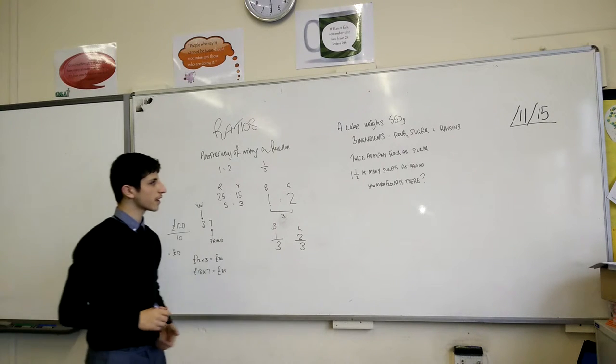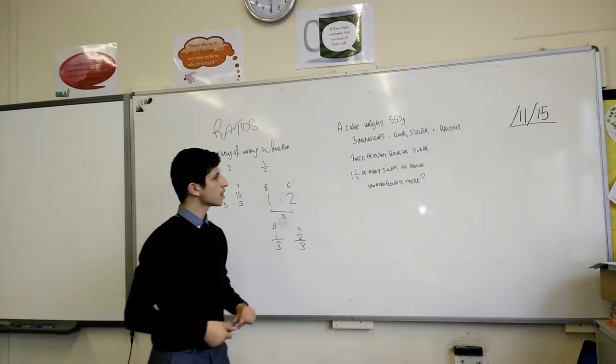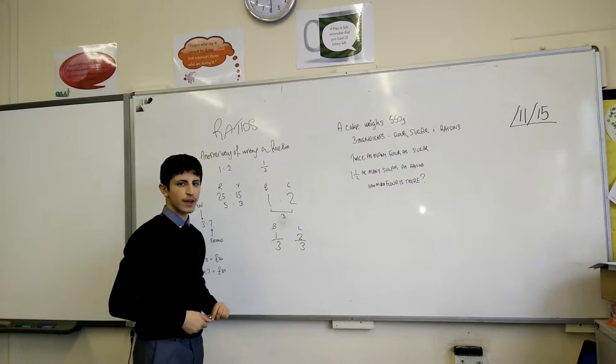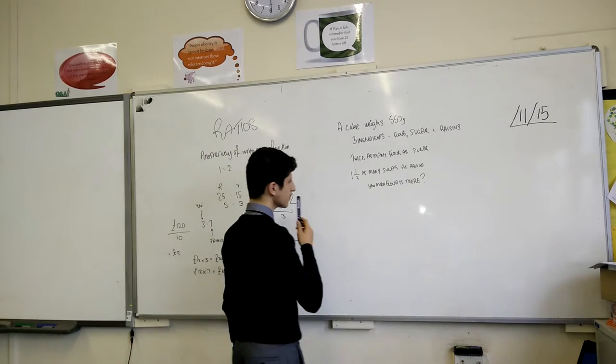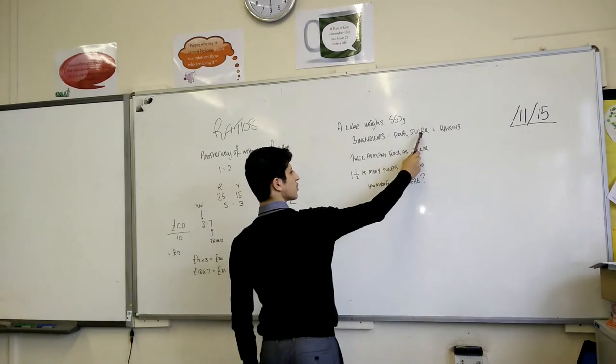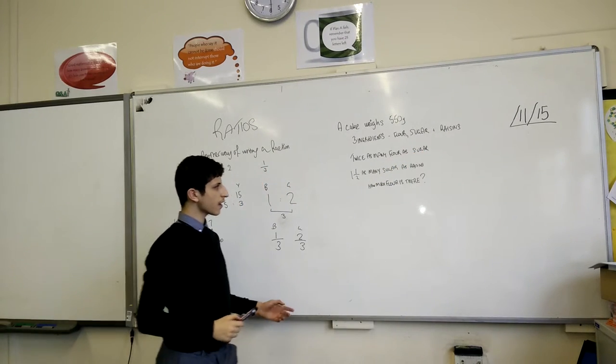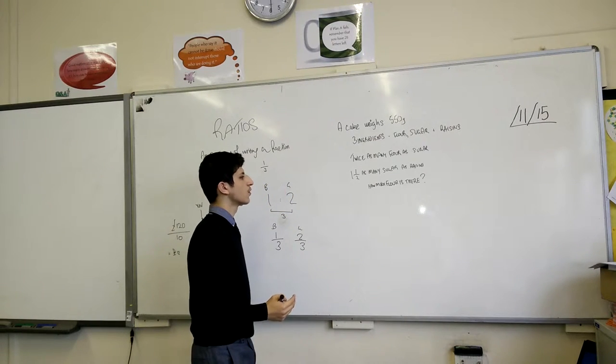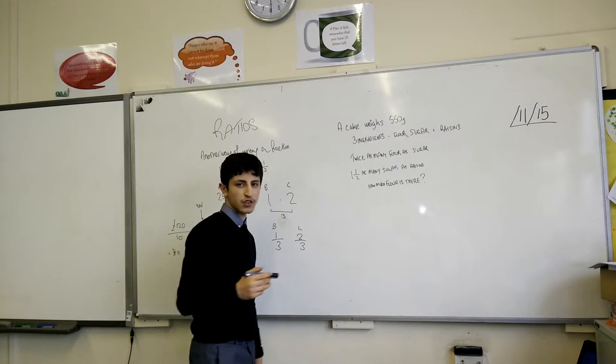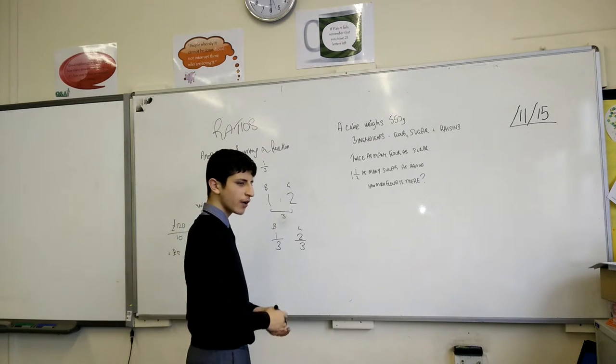I've got this question here. This is actually an example question from the textbook. It says here, a cake weighs 550 grams. You have three ingredients: flour, sugar and raisins. The question says that you have twice as many flour as sugar. You have one and a half times as many sugar as raisins. The question asks, how much flour is there?